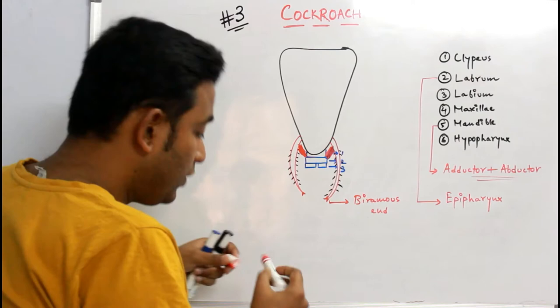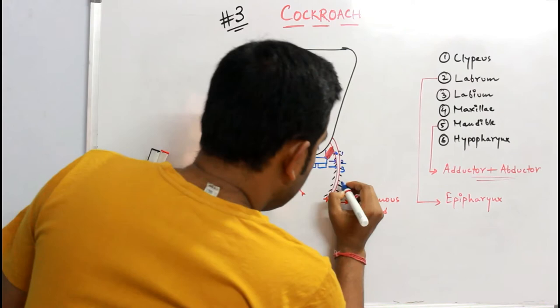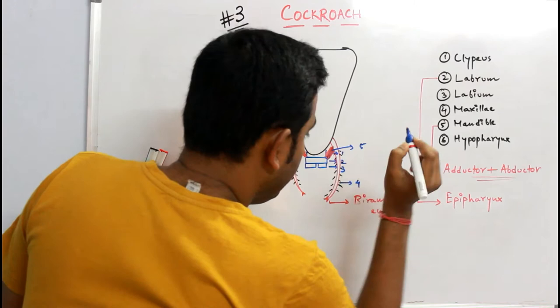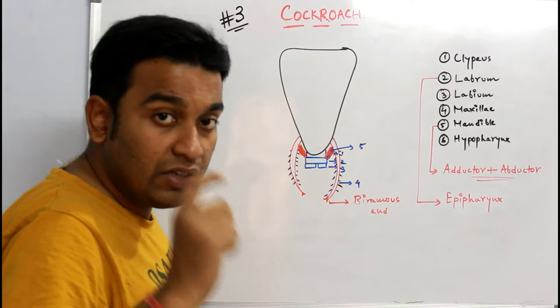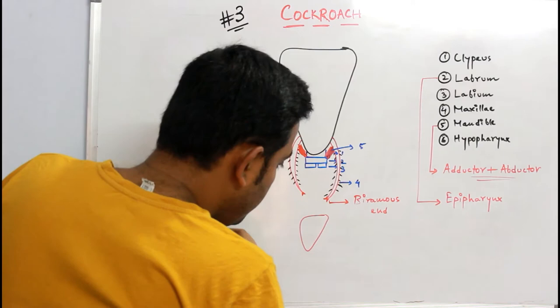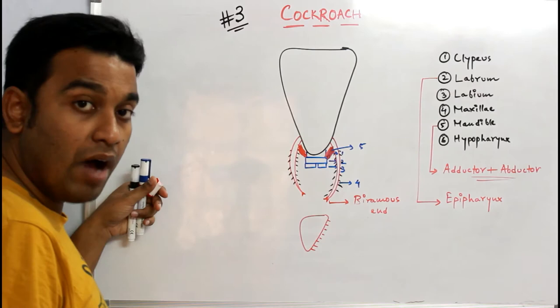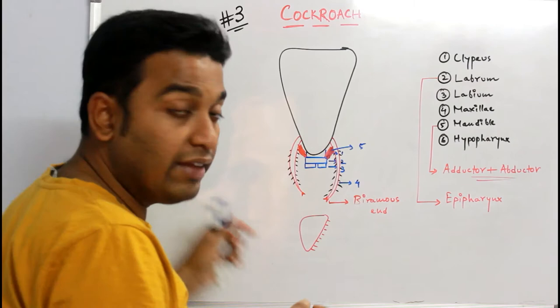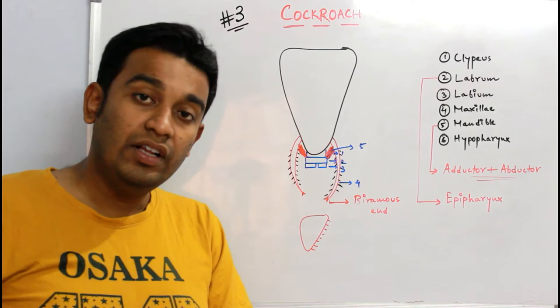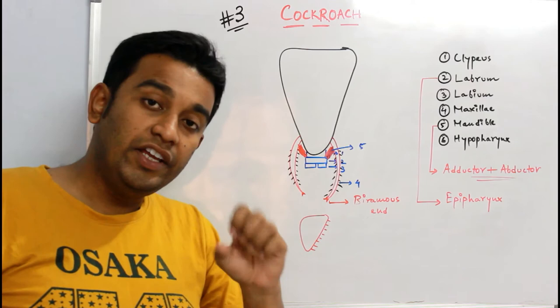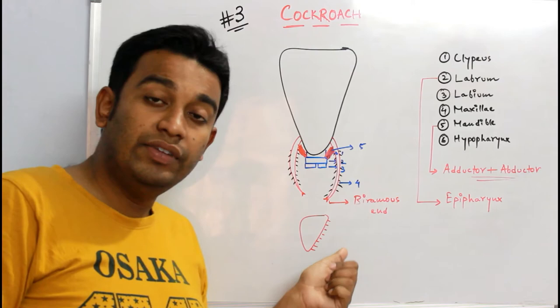This is number four maxilla and this is number five mandible. If I show you a typical structure of mandible, it somewhat looks like this triangular ring shape and they have the serrated margin projections towards the inside. This margin is known as a serrated margin and they act as teeth. That means mastication of the food, biting and chewing of the food will be done due to the presence of this serrated margin which is typically present in the mandible.